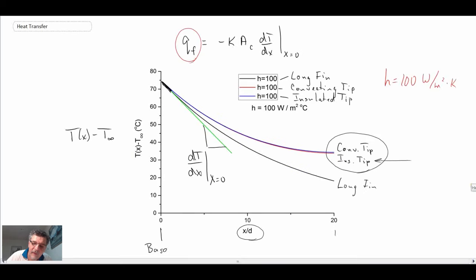The other one is that for the lower convective environment, the convecting tip and the insulating tip are really quite similar. And we're going to take advantage of that in the next lecture.